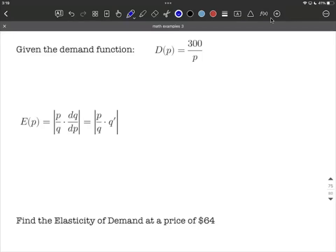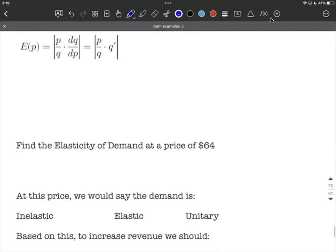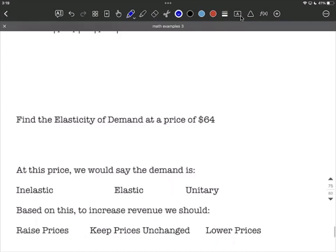On this problem we're given a demand function and our goal is to figure out the elasticity of demand. We're going to evaluate that at a given price point, in this case $64. Then based on that we're going to determine whether this is inelastic, elastic, or unitary, and figure out should we raise prices, keep prices unchanged, or lower prices if the end goal is to increase revenue.